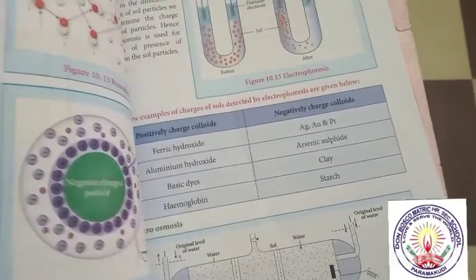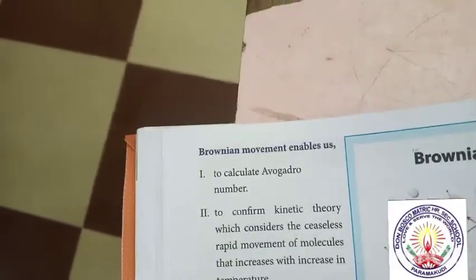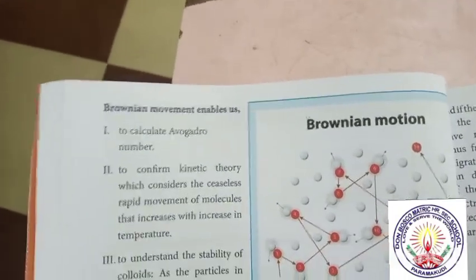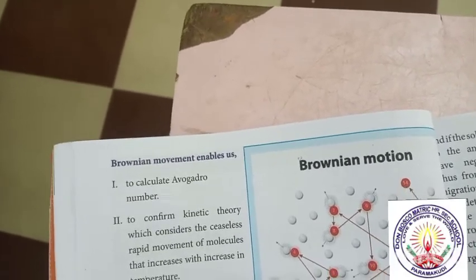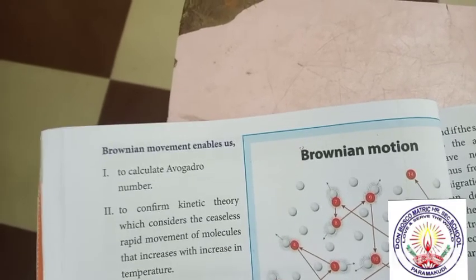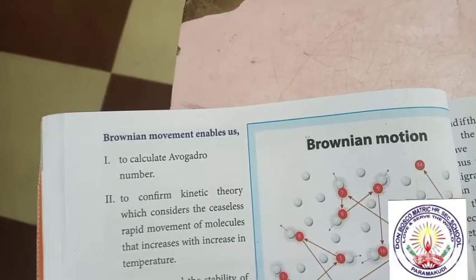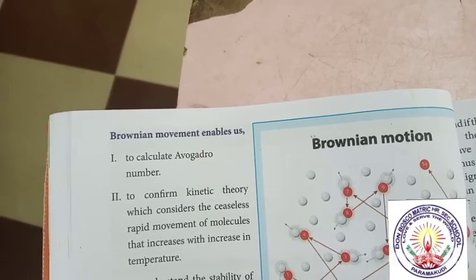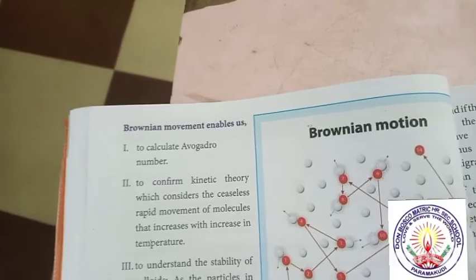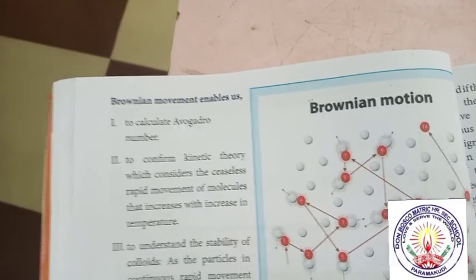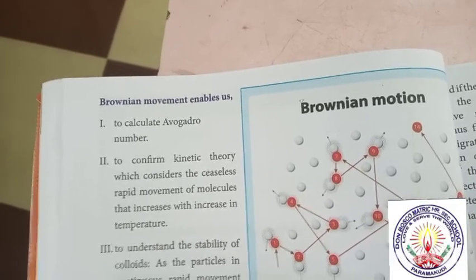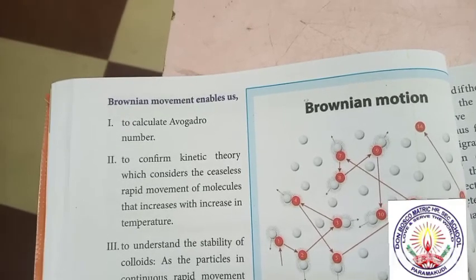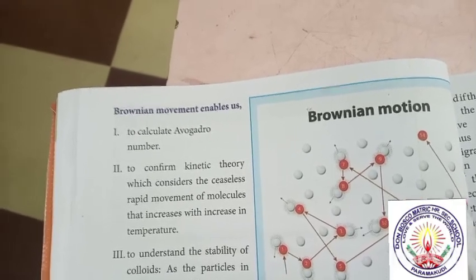Okay students, all of you turn over page number 94. Brownian movement enables us to calculate Avogadro's number, to confirm kinetic theory which considers the ceaseless rapid movement of molecules that increases with increase in temperature. To understand the stability of colloidal particles: as the particles are in continuous rapid movement, they do not come close and hence do not get condensed. That is, Brownian movement does not allow the particles to be acted on by the force of gravity.